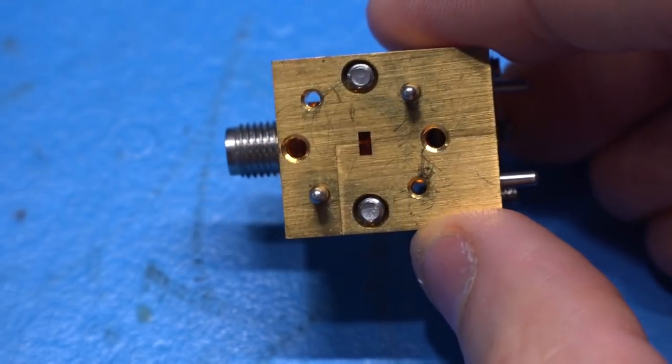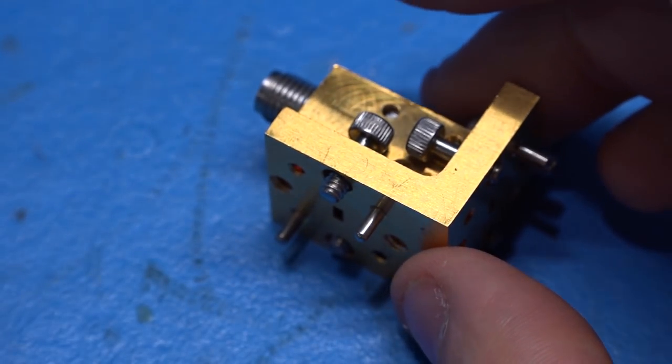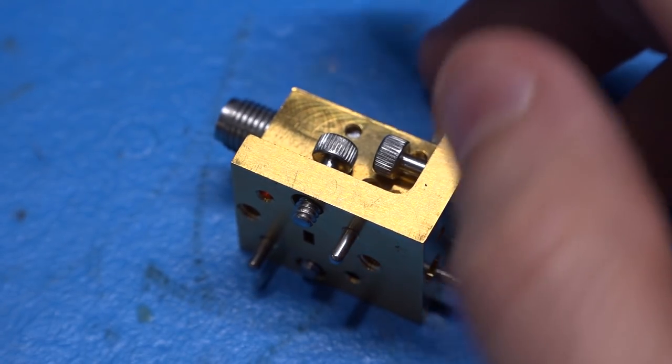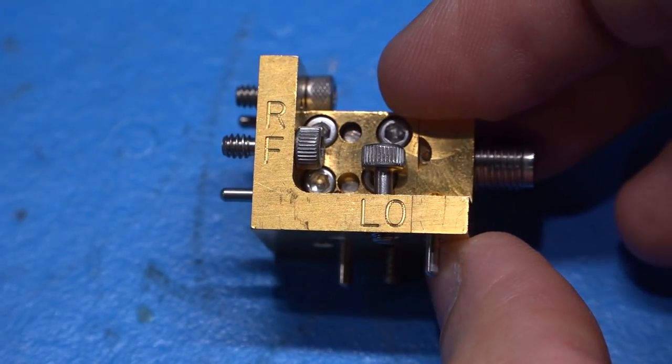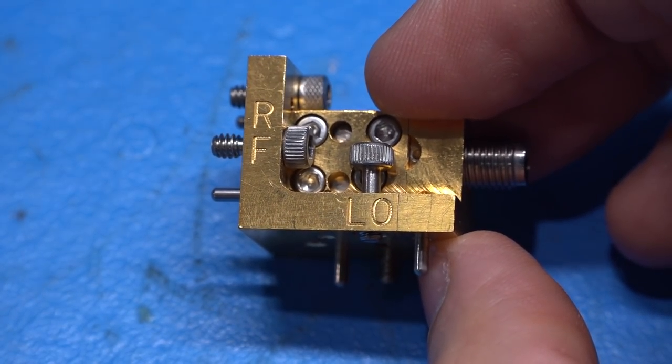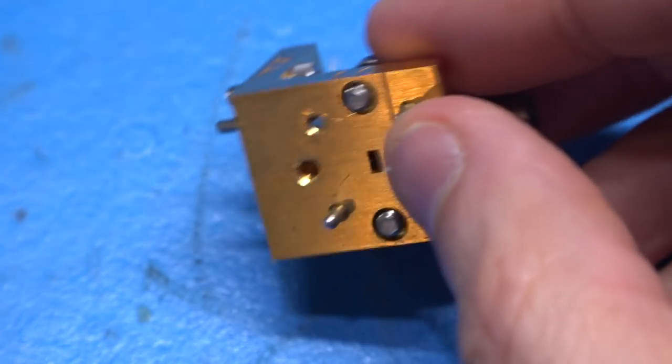And then there's a waveguide port right here and a waveguide port right here. So this actually operates from 75 to 110 gigahertz. Now you've probably already guessed what it is. Let me flip it on the other side. You can see that the ports are labeled. So this is indeed a mixer. It's a balanced mixer, and it has an IF port with a very high frequency support.